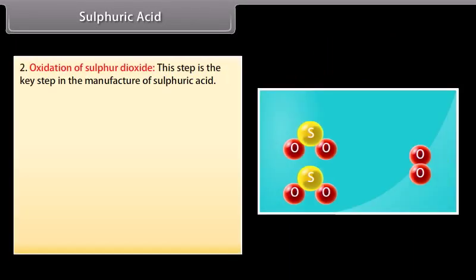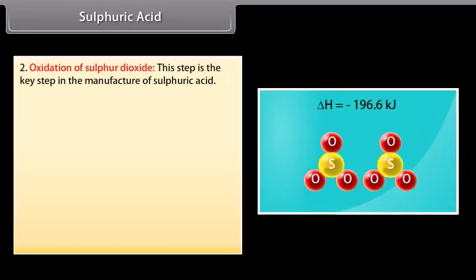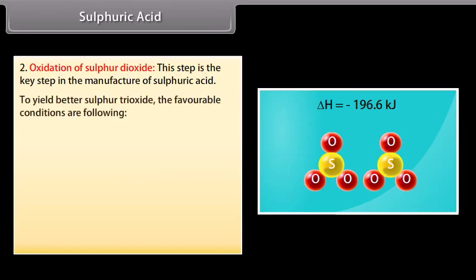Oxidation of sulphur dioxide: This step is the key step in the manufacture of sulphuric acid. To yield better sulphur trioxide, the favourable conditions are the following: